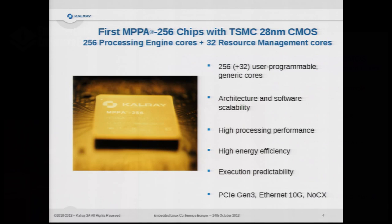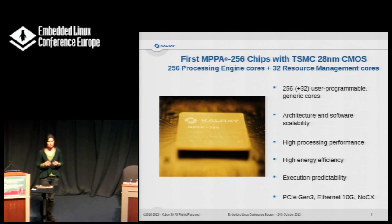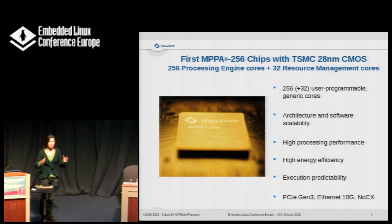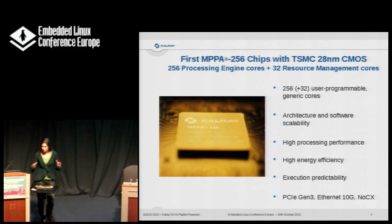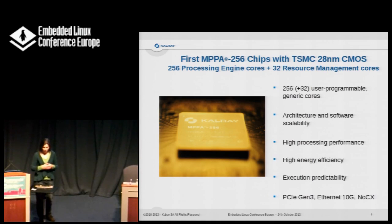The chip is called MPPA256 because it has 256 cores available to the user. It has some more, and all of those cores use the same instruction set, so it's completely homogeneous. The processor has many interesting features: it has low power consumption, nice performance, it's very predictable, and it has a lot of external interfaces. And what is even nicer? It exists.